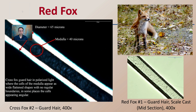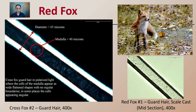Continuing on to the red fox — looking at the diameter and medulla, the cross red fox guard hair, and under polarized light, which can impact the image we see. The cells of the medulla appear as wide and flat-shaped with no regular boundaries, and in some places the cells appear angular. This is the guard cell at 400 times magnification. Here's the guard scale with the scale cast — taking that cuticle region and getting a cast, an impression, of that cuticle region.